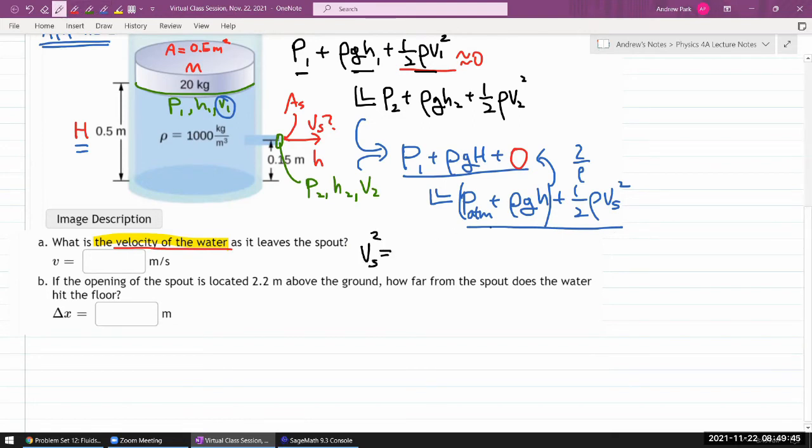So v_spout squared is equal to, let me just express these differences. p1 minus p_atmosphere plus ρgh minus ρg small h. I think I can factor out ρg. So it's going to be ρg times big H minus small h. Okay, let me take the whole thing, multiply through by two over ρ. And that'll get me to here. I think if necessary, pause this video, double check that I did algebra correctly. And to get rid of the square, I would just do square root here.